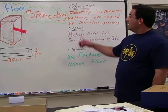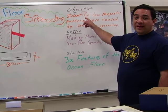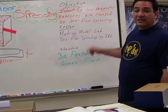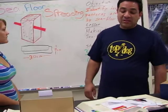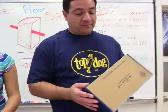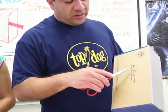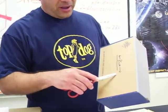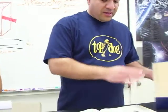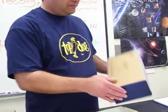The objective is to identify how magnetic patterns are caused by seafloor spreading. Some of the supplies you will need is a shoe box and some scissors. Down the middle of the box, make a slit that's 8 centimeters in length. This represents the mid-ocean ridges.